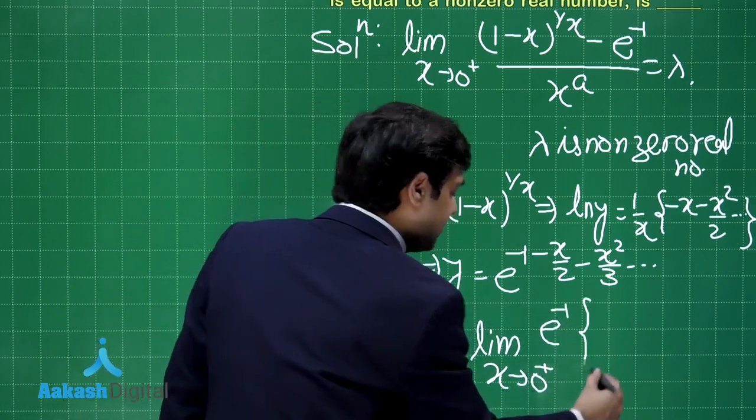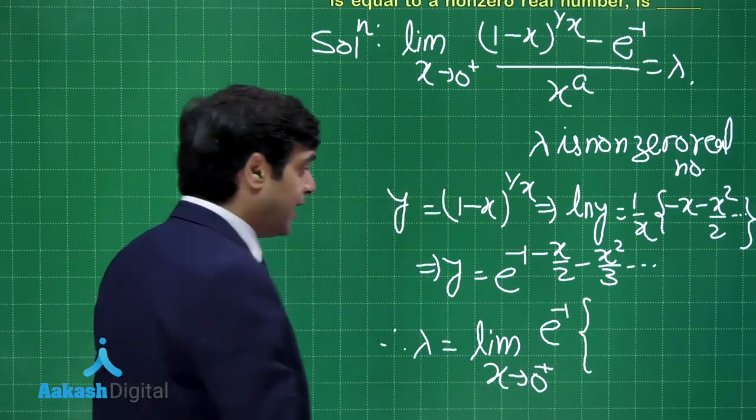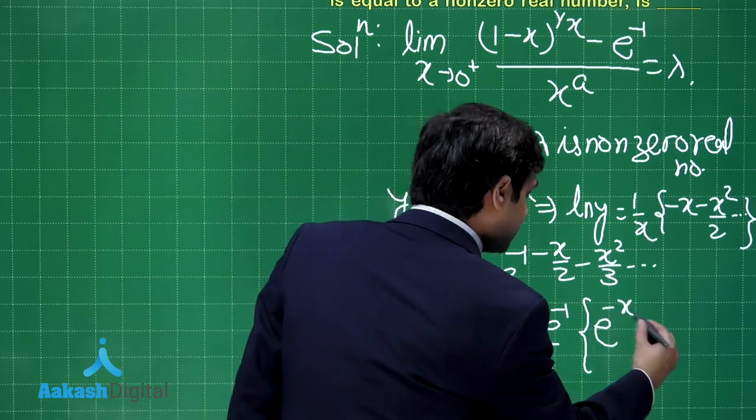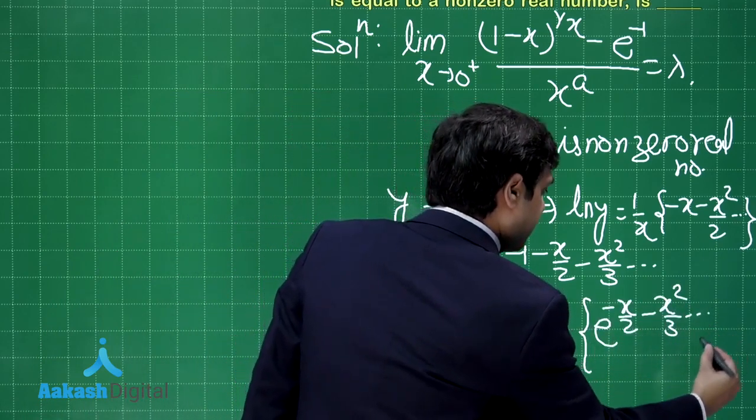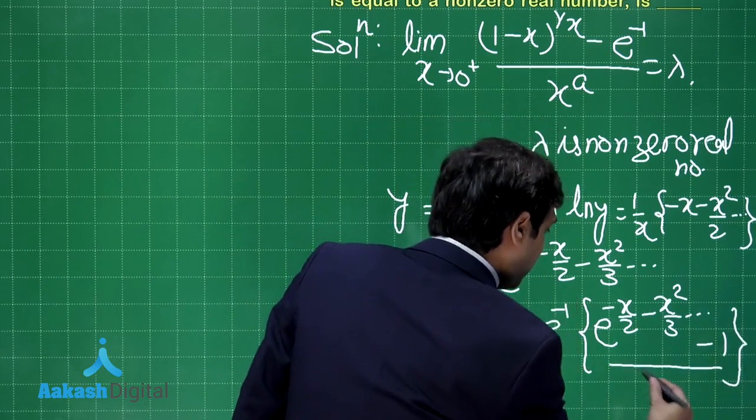E to the power minus 1 can be taken common. What we are left with? This term minus 1 upon x to the A.